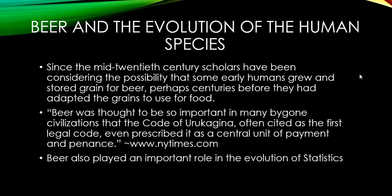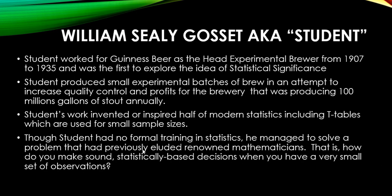Since the mid-20th century, scholars have been considering the possibility that some early humans grew and stored grain for beer, perhaps centuries before they adapted grains for food. It's so important that the original legal code even prescribed beer as a central unit of payment and penance. Beer also played an important role in the evolution of statistics. William Seeley Gossett — aka Student — worked for Guinness Beer as the head experimental brewer from 1907 to 1935, and he was the first to explore the idea of statistical significance. Student produced small experimental batches of brew to increase quality control and profits for the brewery, which was producing 100 million gallons of stout annually.